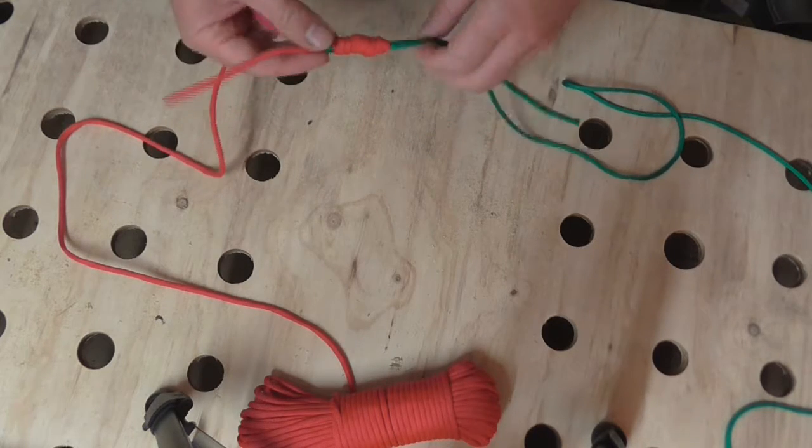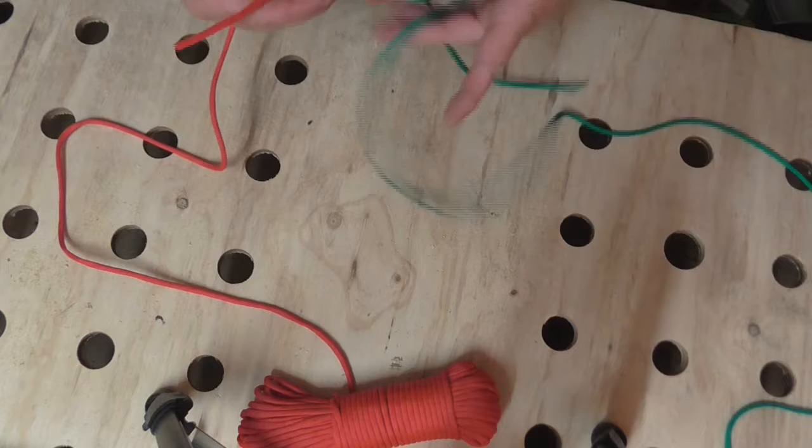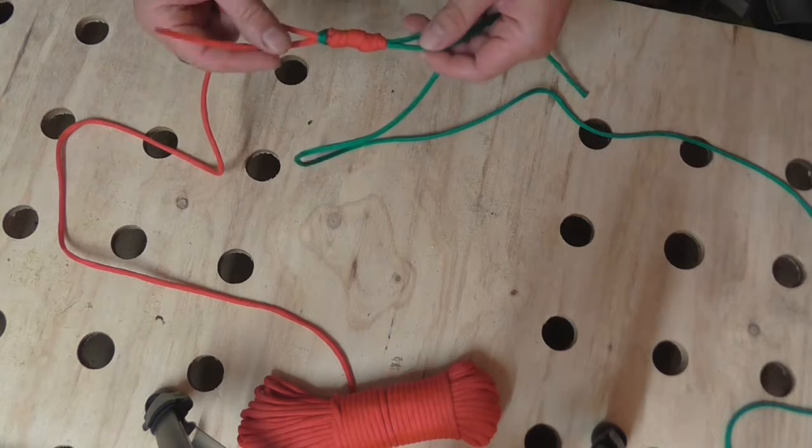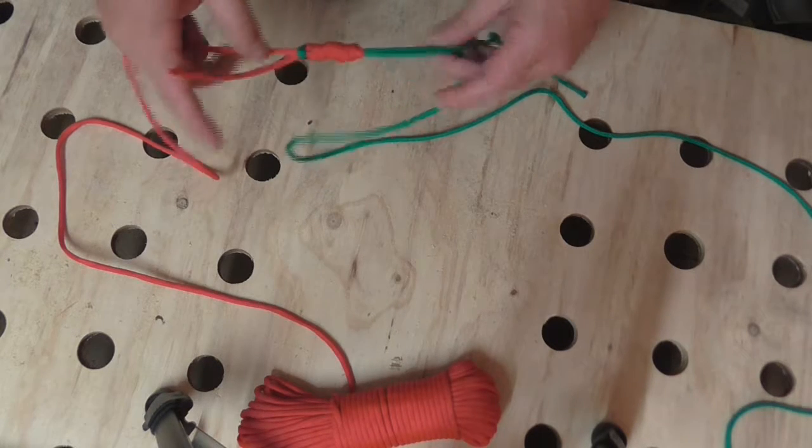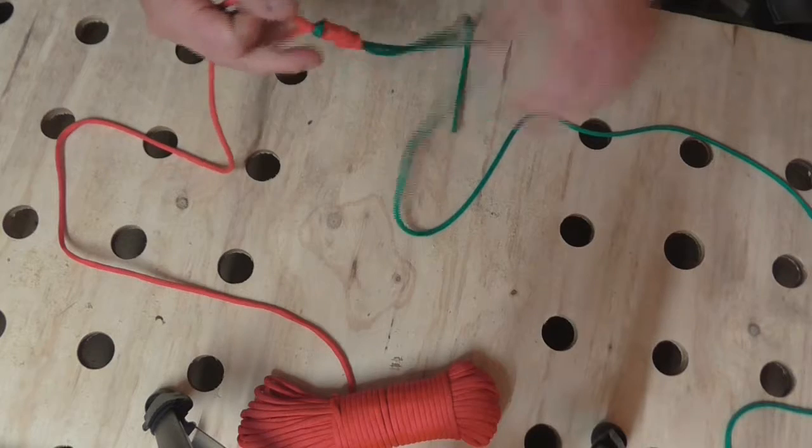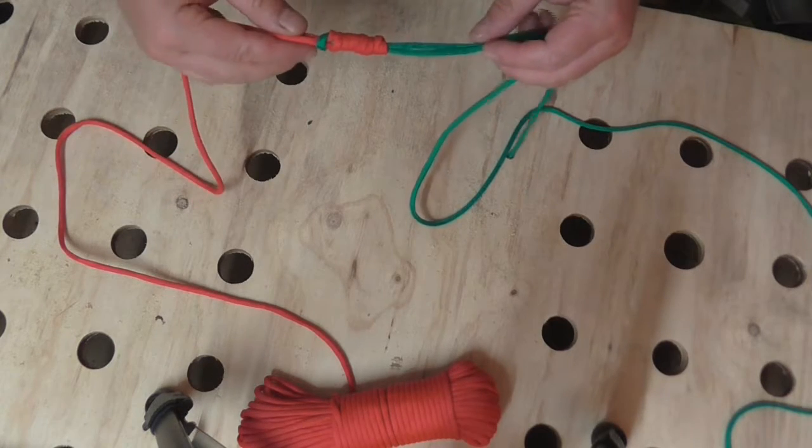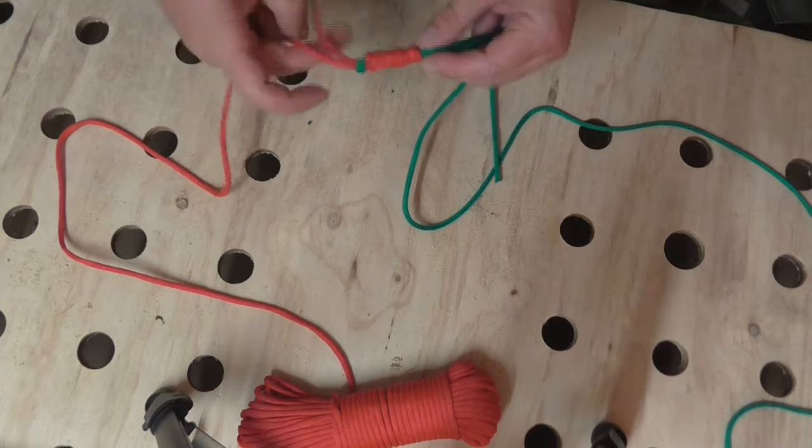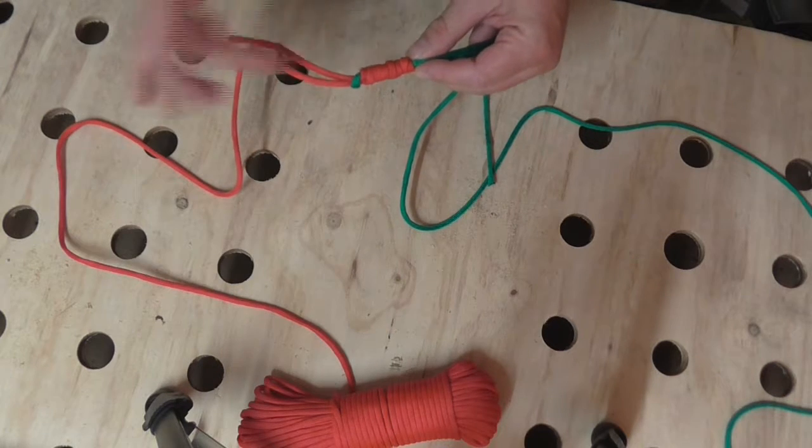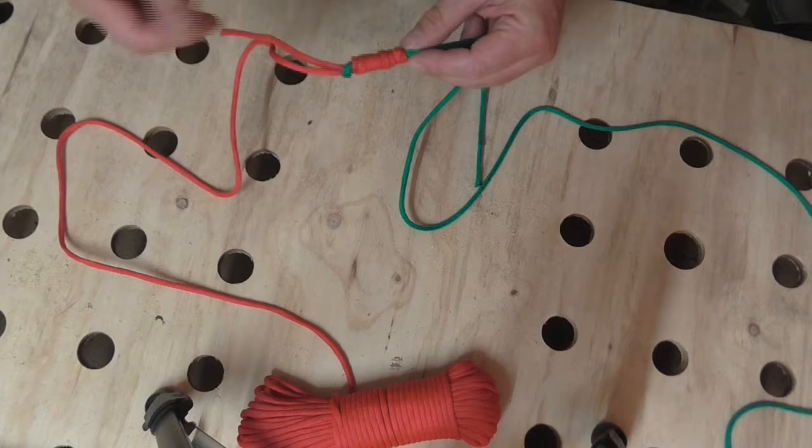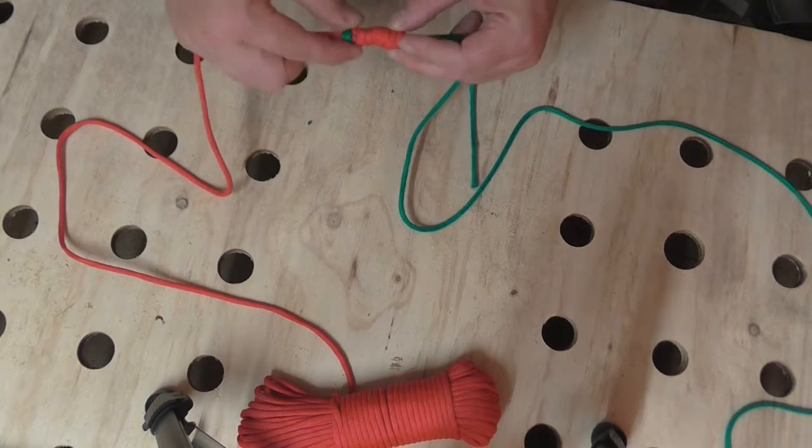And then you want to trim the tags down. I like to keep, I guess, a centimeter or so of line because I don't like my knots being placed under too much stress. But you also don't want the tags at this end. You don't want the tag being so long that it then starts getting stuck in the eyes of the fishing rods.